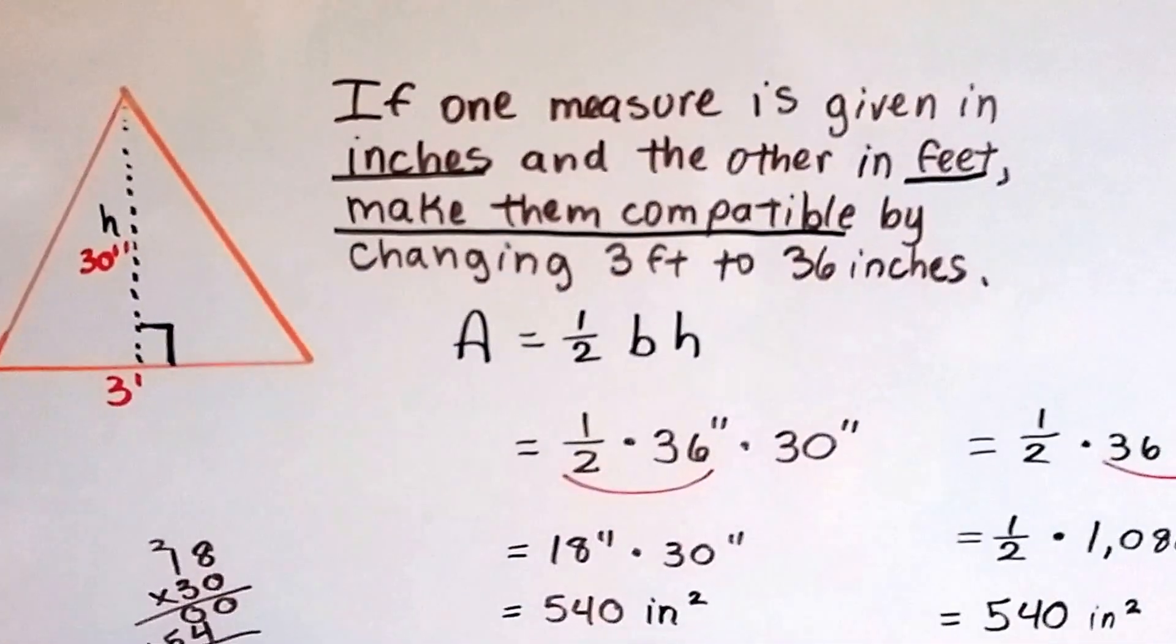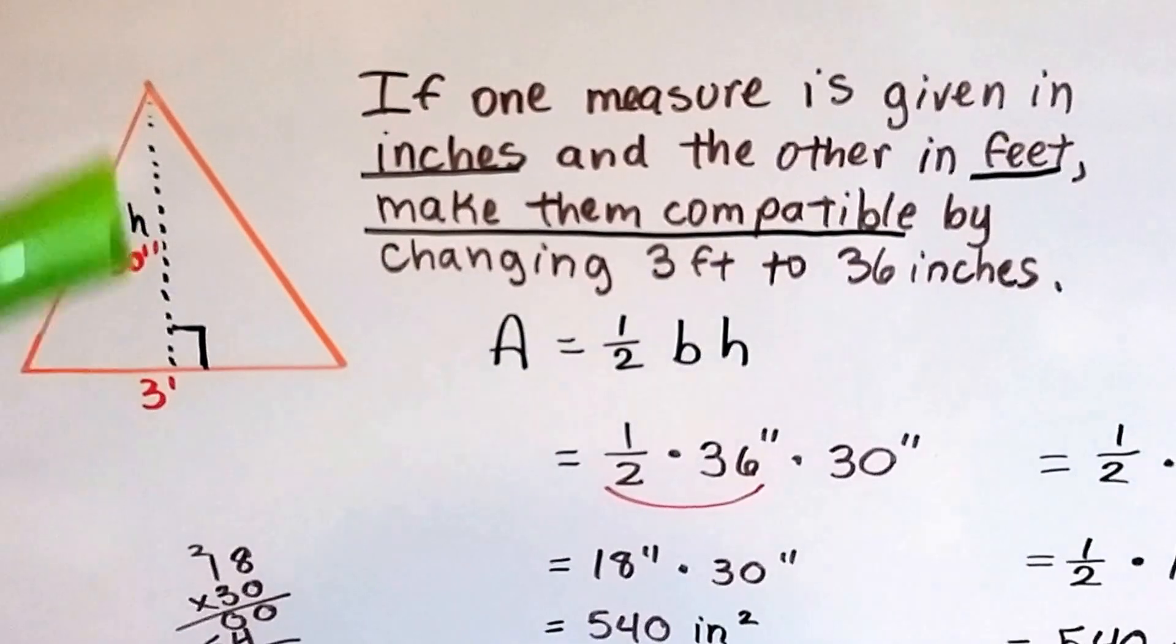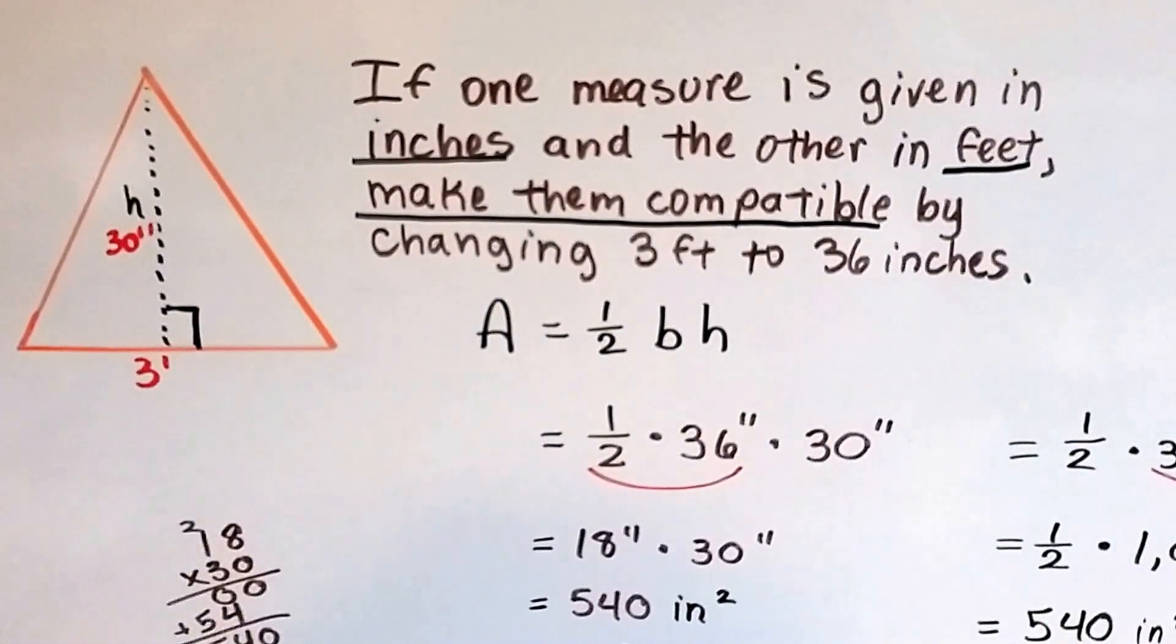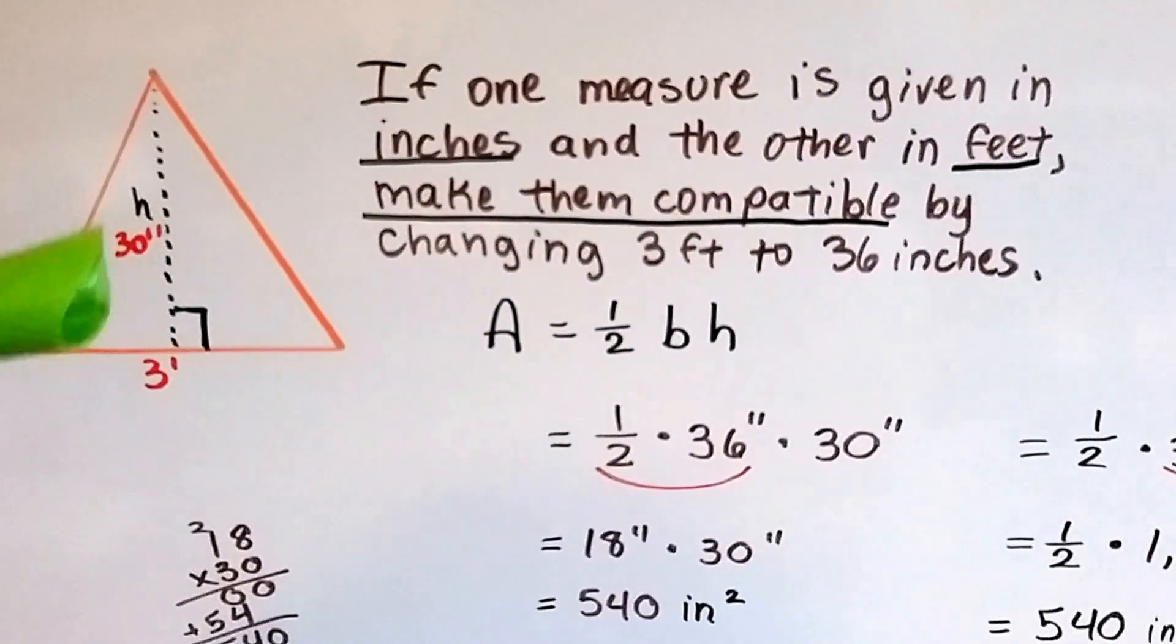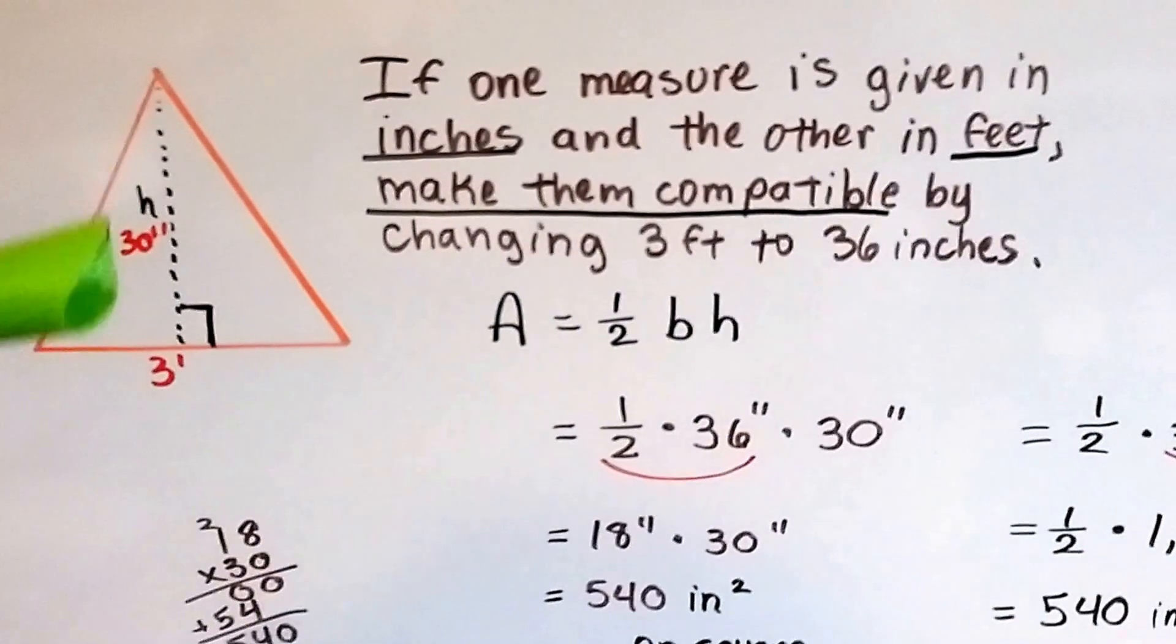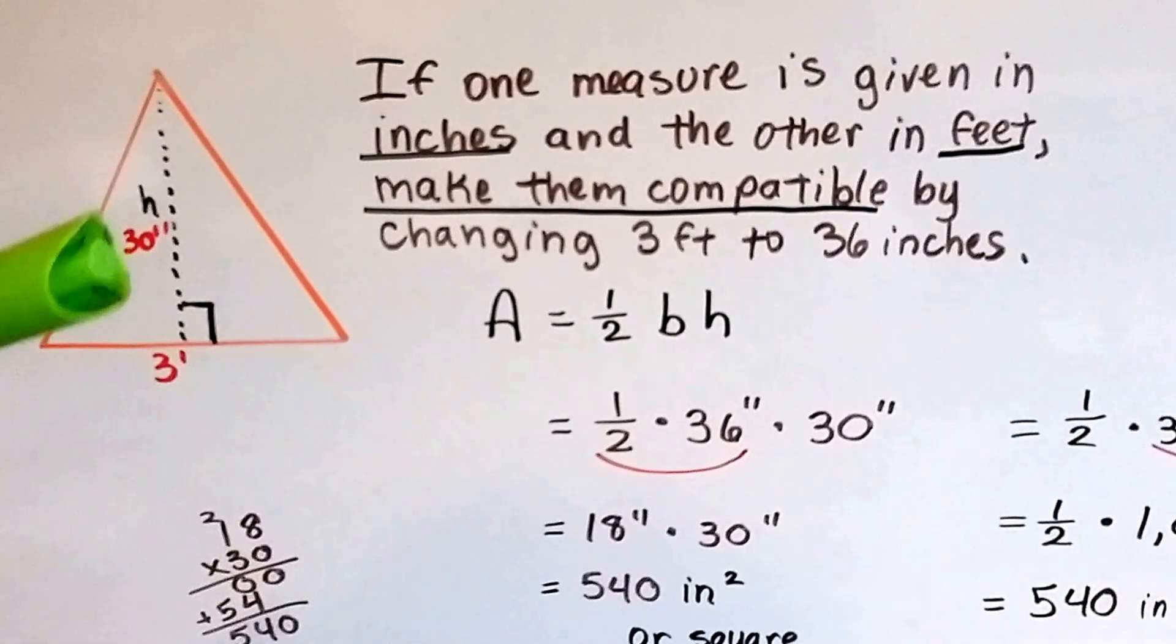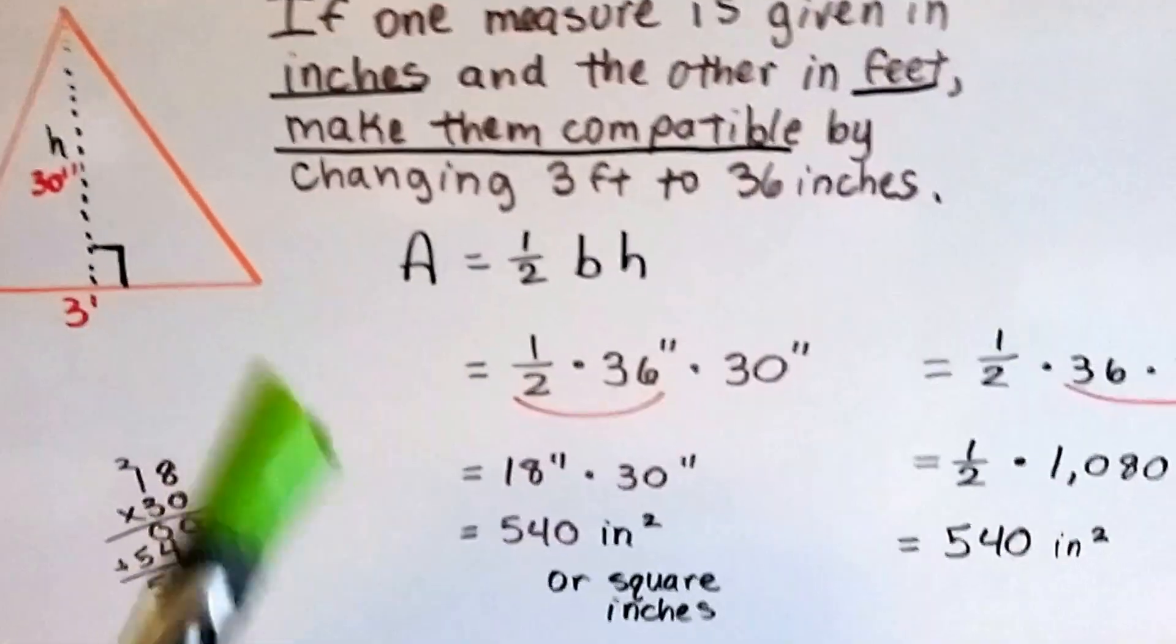Now let's check this one out. If one measure is given in inches, this height is 30 inches, and the other in feet, the base is 3 feet, make them compatible by changing 3 feet to 36 inches. It wouldn't make sense to change this into feet because it's not an even increment of feet. If this was 24 inches, we could change it to 2 feet because 12 and 12 is 24. But because it's an odd number, 30, it's like 2 and a half feet, well, we just change them all to inches.